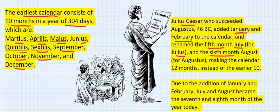Making the calendar 12 months instead of the earlier 10. Due to the addition of January and February, July and August became the seventh and the eighth months of the year today.